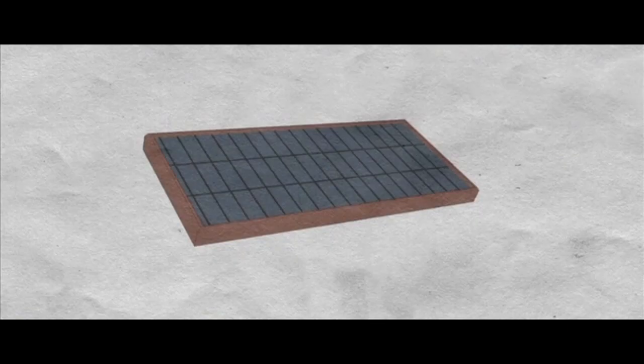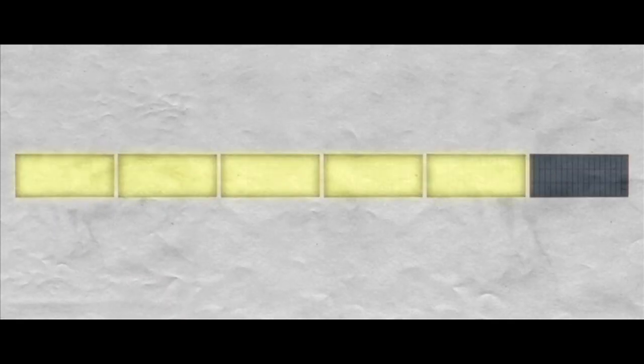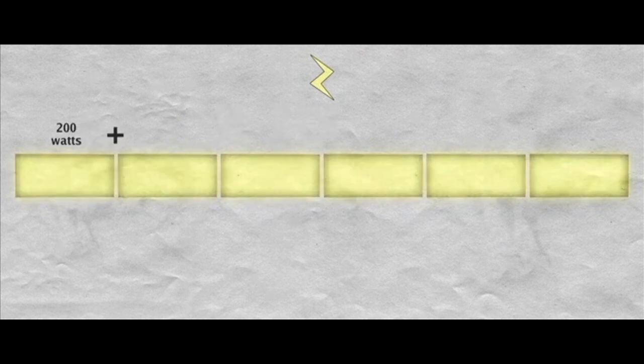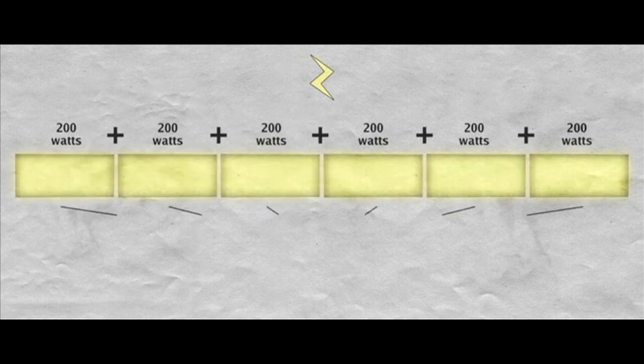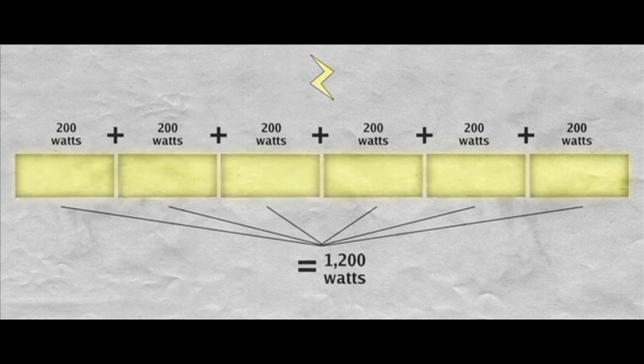Solar panel. This solar panel is the first one out of six. Each one can generate 200 watts, so all together, this Earthship will be able to cleanly generate 1,200 watts of power, without burning fossil fuels.